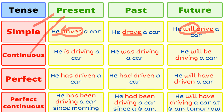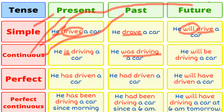In present continuous tense, with singular we use 'is,' with plural we use 'are,' and with I we use 'am.' So: 'He is driving a car.' If it were I: 'I am driving a car.' For past continuous: 'He was driving a car.' For future continuous: 'He will be driving a car.'